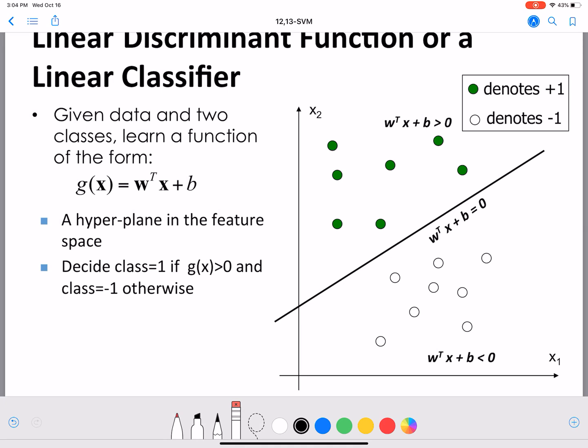A linear classifier has this general form: W transpose x plus b equals zero. For two dimensions x1 and x2, we can visualize this as a line. That's what we have done here. We have the w which are the weights of the features, and x are the features.